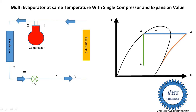The refrigerant is then supplied into evaporator 2. The total mass m equals m1 plus m2; out of mass m we supply mass m2 into evaporator 2. The evaporator is also a heat exchanger, and in evaporator 2 the process 4 to 1 takes place at constant pressure, absorbing heat from the space or room where cooling is required.